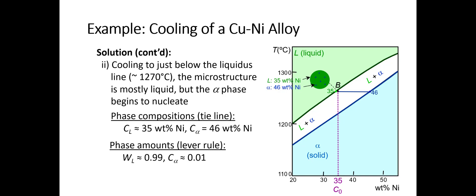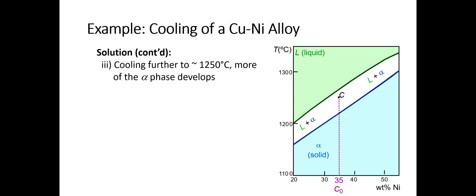Now let's cool further down to 1250°C. More of the alpha phase is going to develop. We're getting a little closer to the solidus line, which means we will have more alpha. We do the exact same procedure to find the phase compositions again. Our tie line shows that the liquid phase has a phase composition of 32 weight percent nickel, and the alpha phase, the solid phase, has a phase composition of 43 weight percent nickel.